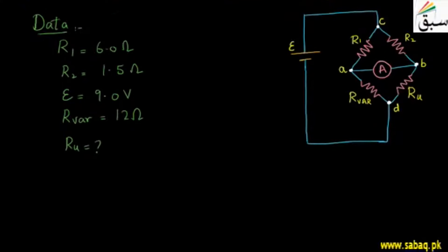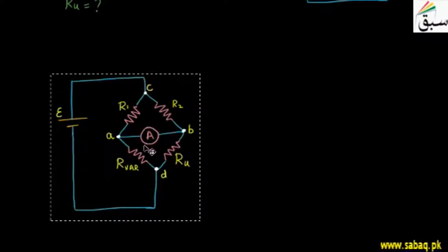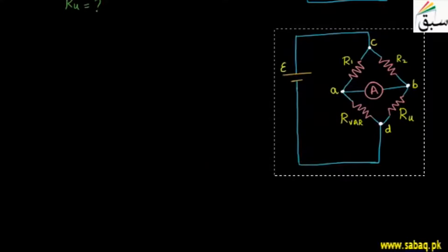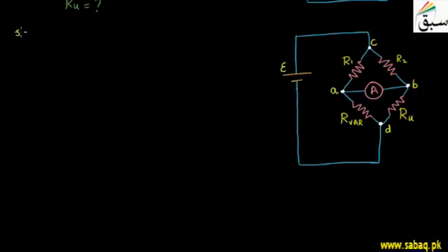Let's start the solution. I will paste the circuit diagram here so that it will be easy to solve. We can see that R-variable has been adjusted to 12 ohms. This tells us that when the resistance is adjusted to 12 ohms, the galvanometer deflection is zero — meaning the current through it is zero. This means the potential at point A is equal to the potential at point B.